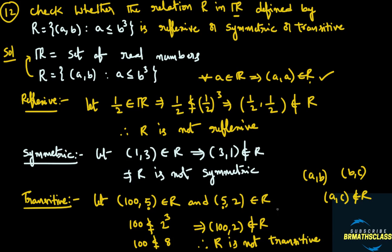So, checking here: this relation is not reflexive, this relation is not symmetric, and this relation is not transitive. They asked us to check whether this relation is reflexive, symmetric, or transitive. The final conclusion is: this relation is neither reflexive, nor symmetric, nor transitive. If you like this video, please press the like button. If you have any doubt, please comment. And don't forget to subscribe to my YouTube channel to get more updates. Thank you.